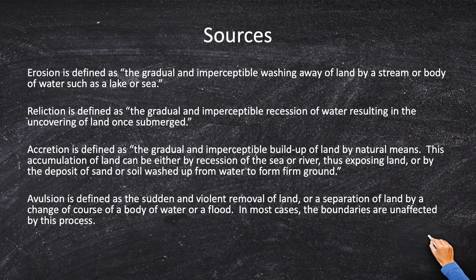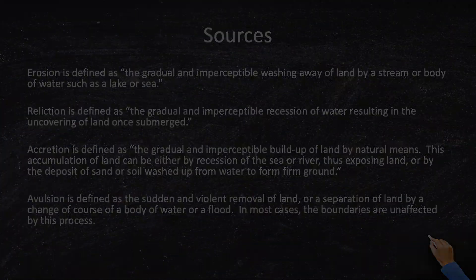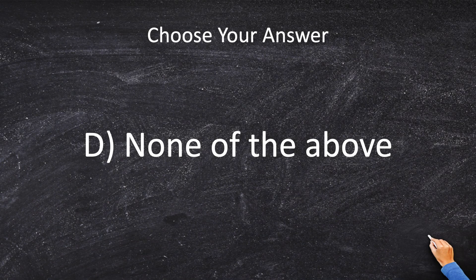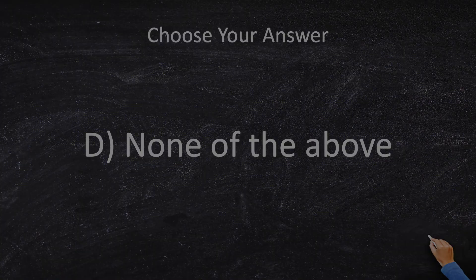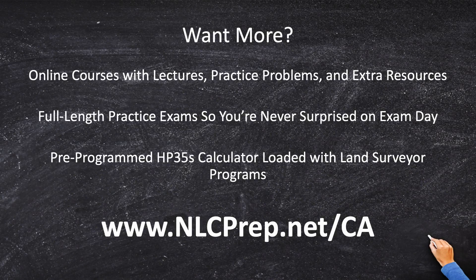So: erosion eats away the land, accretion builds it up, avulsion suddenly breaks off the land — but reliction is really in a class all its own. There's no real opposite of reliction, and therefore the answer is D: none of the above.